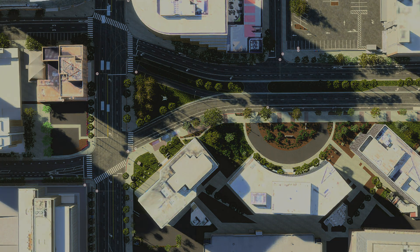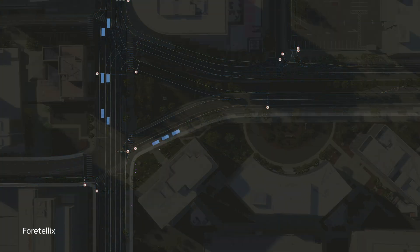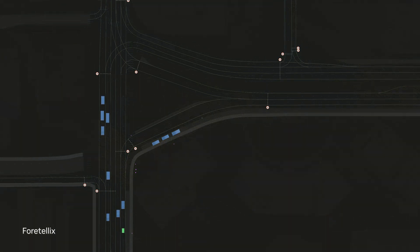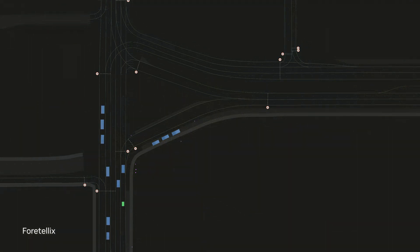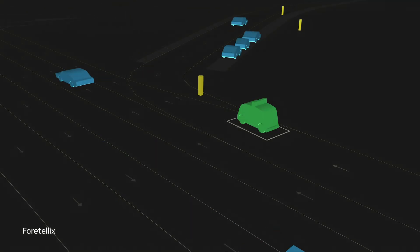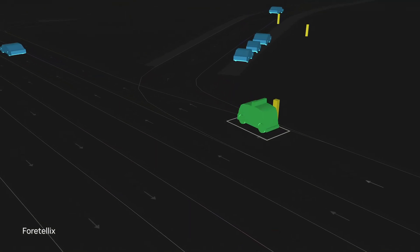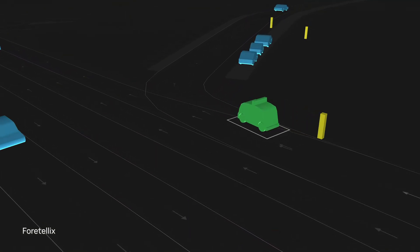Here's a scenario generated by Fortelix and simulated with Neuro's AI driver. This object-level representation is an effective way to test AV planning capabilities. But to train and test how a vehicle perceives the world, AV developers need sensor data.